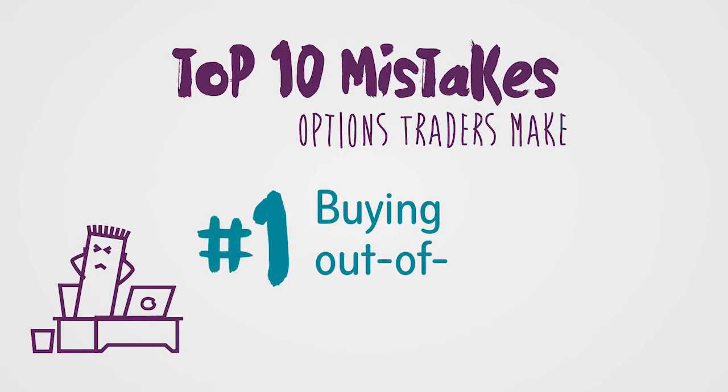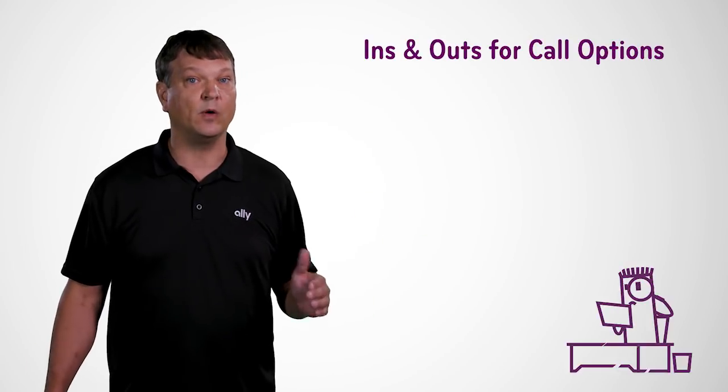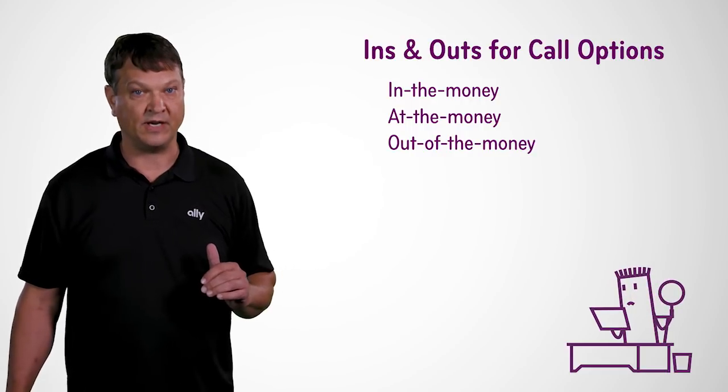The first most common mistake that we're going to look at is buying out-of-the-money option contracts as their first trade. Out-of-the-money option contracts are very compelling to beginning option traders because they're cheap. But they're cheap for a reason, so we have to talk about that reason to understand why we are making that mistake. Before we get too far, let's define in, at, and out-of-the-money option contracts.